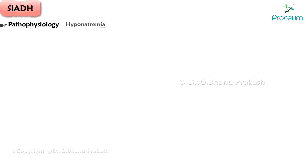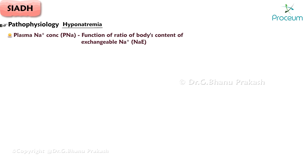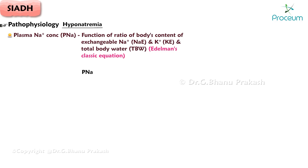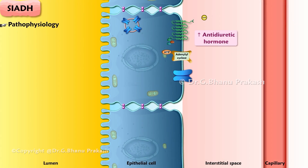Pathophysiology. The plasma sodium concentration is a function of the ratio of the body's content of exchangeable sodium and potassium to total body water, as described by Edelman's classic equation: plasma sodium concentration equals exchangeable sodium plus exchangeable potassium divided by total body water. Antidiuretic hormone secretion results in concentrated urine, and therefore urinary output is reduced.